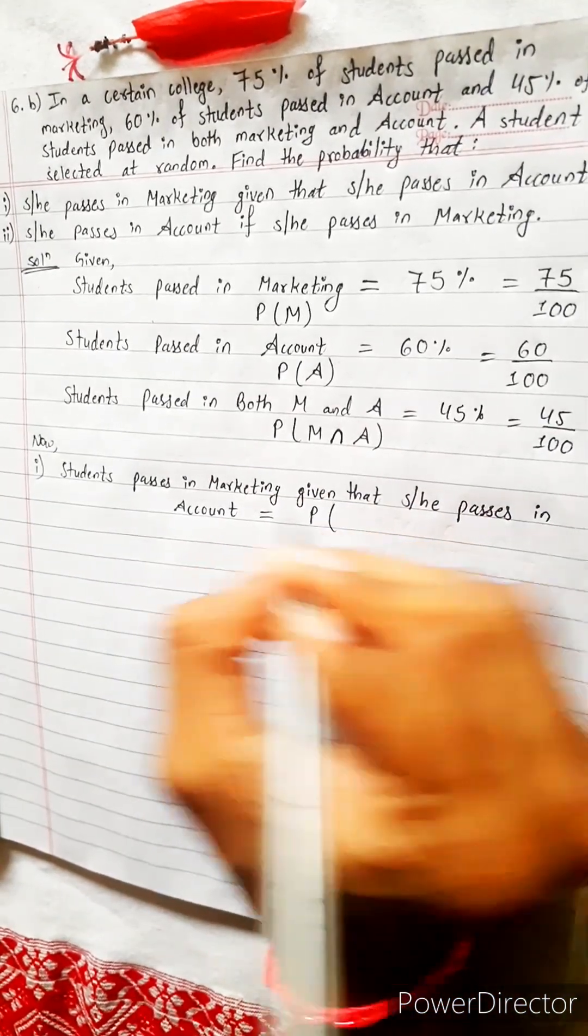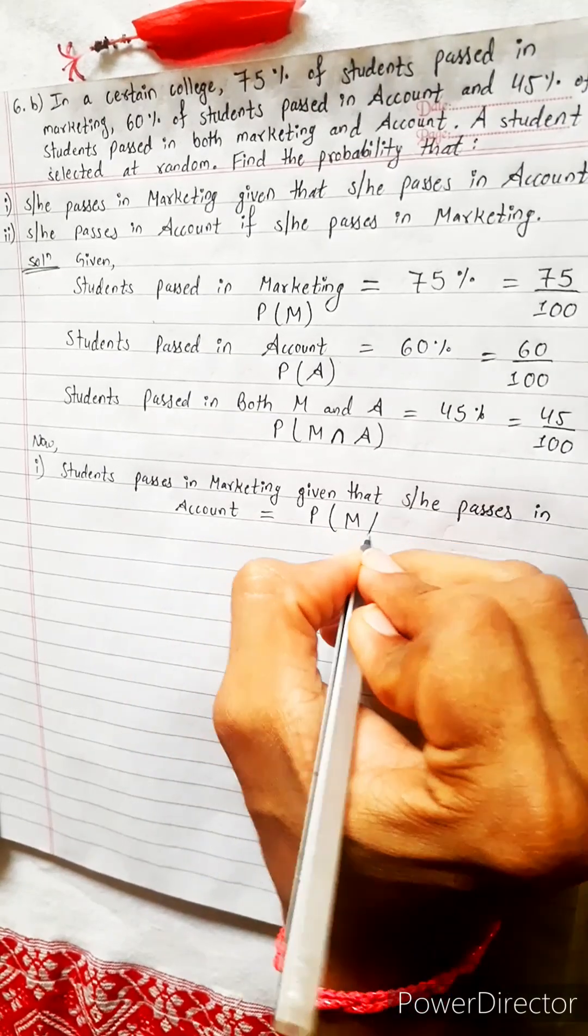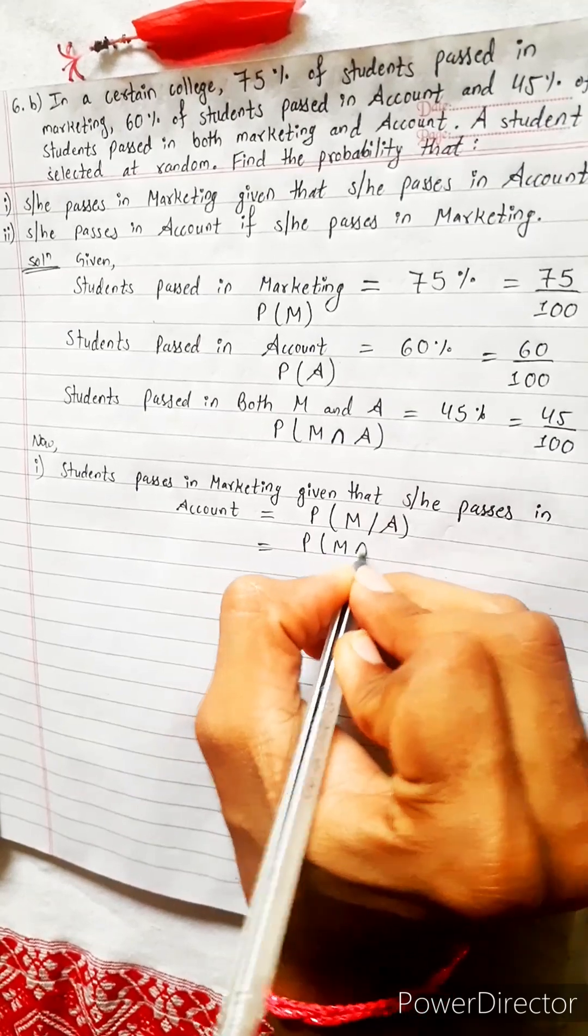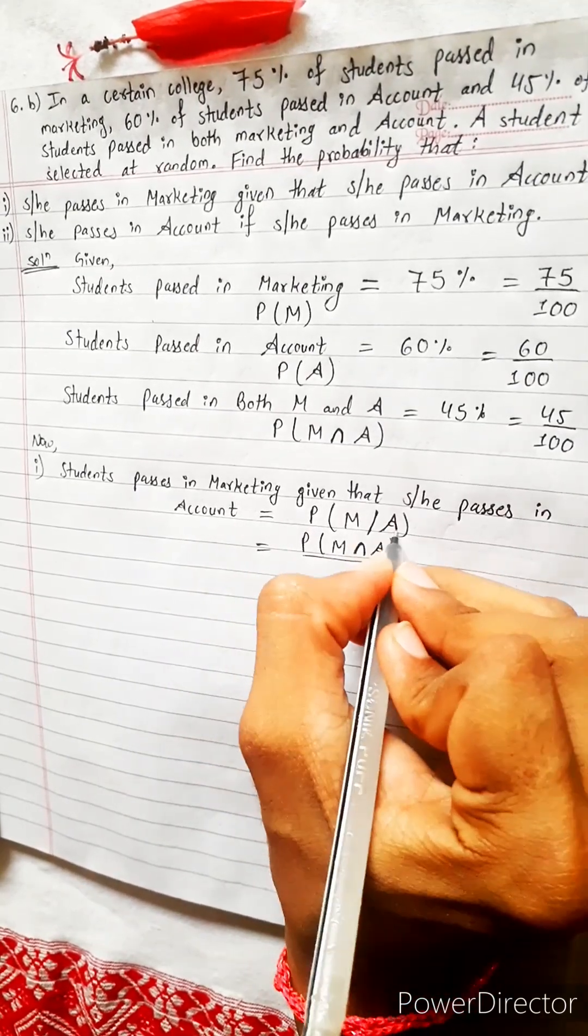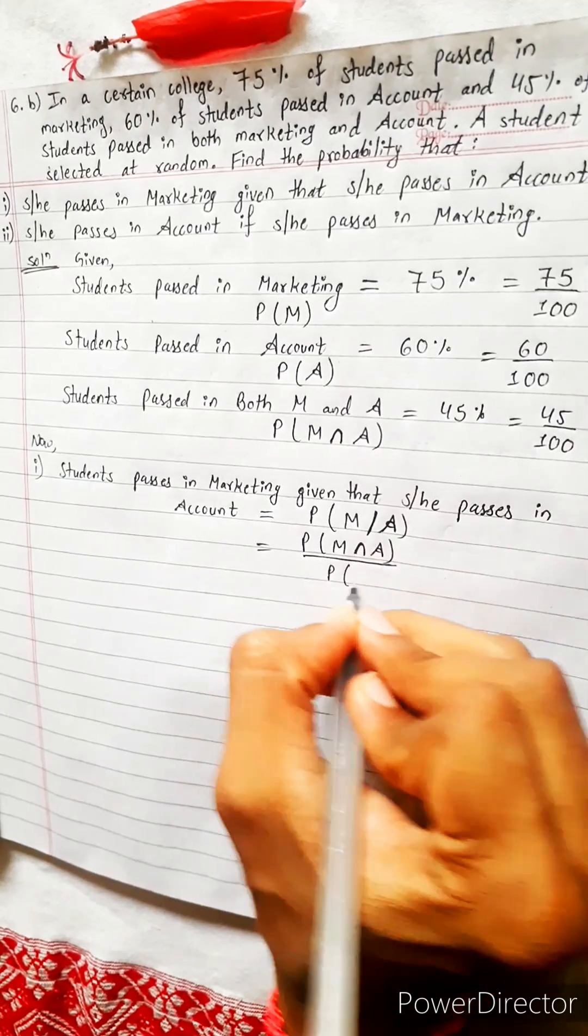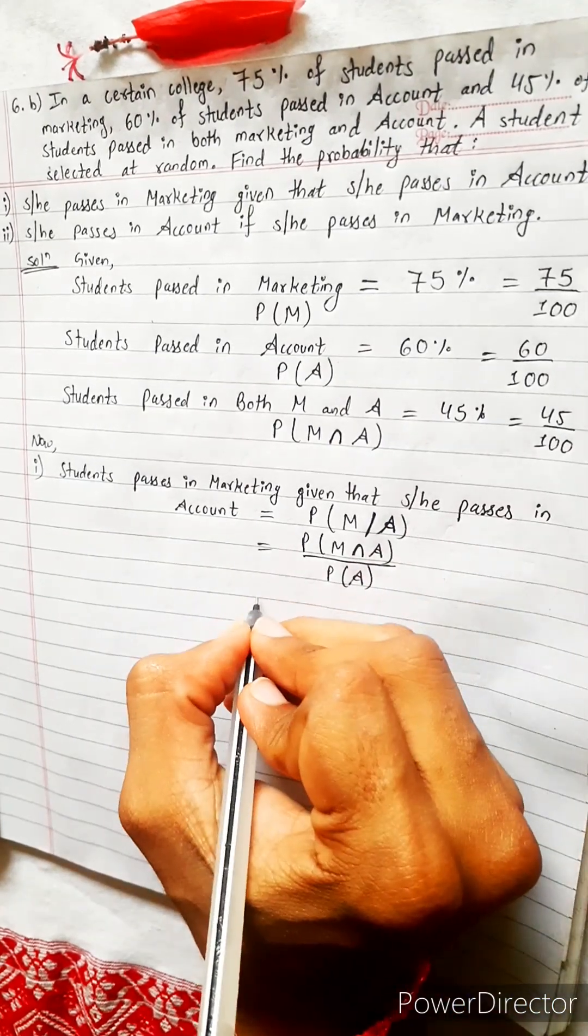So according to this, formula is P of marketing divided by account. And what is this formula? Its formula is this: at first intersection, and then divide by A. Look here, this is division and A, so divide this by A. Very simple.